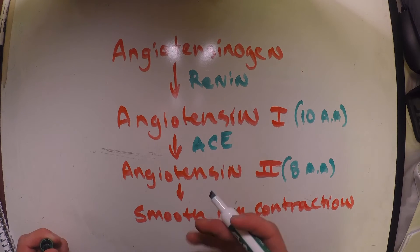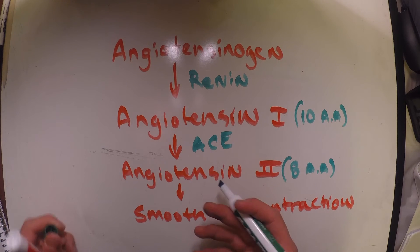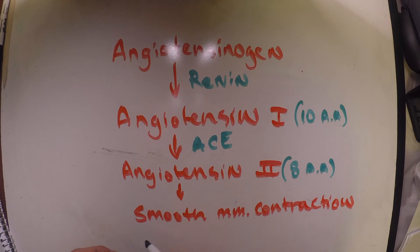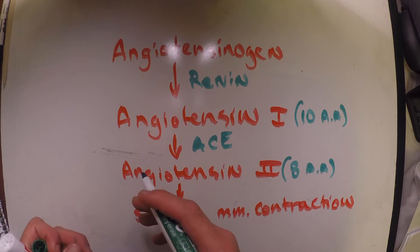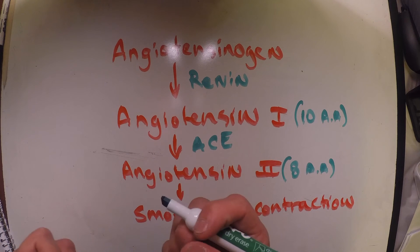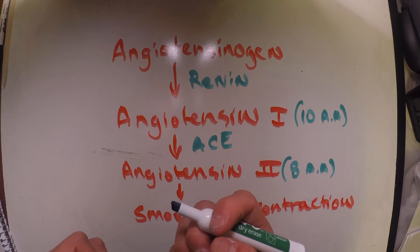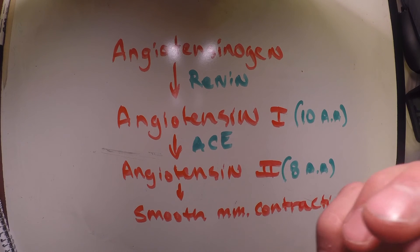So we have our angiotensin 2, which is now an active amino acid. What it will allow is for us to contract our smooth muscle. If you look back to that image I drew before, it's going to contract that smooth muscle in the afferent arterial. In doing so, it's going to have some important functions.